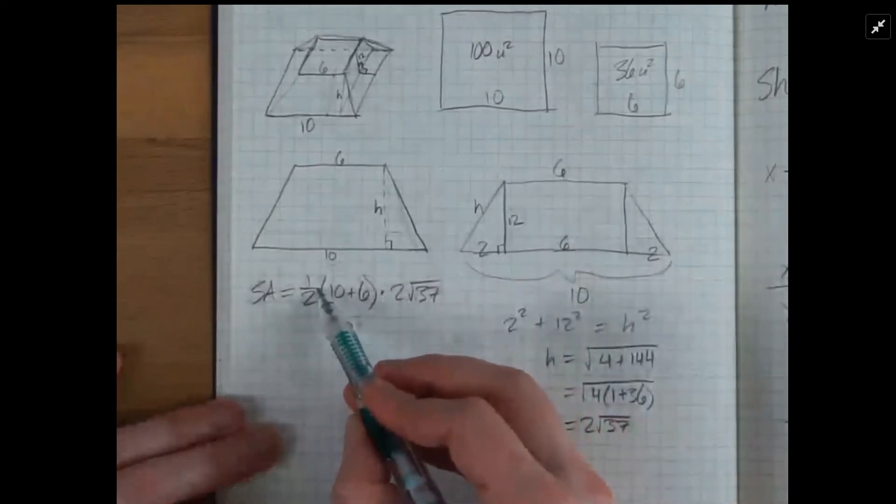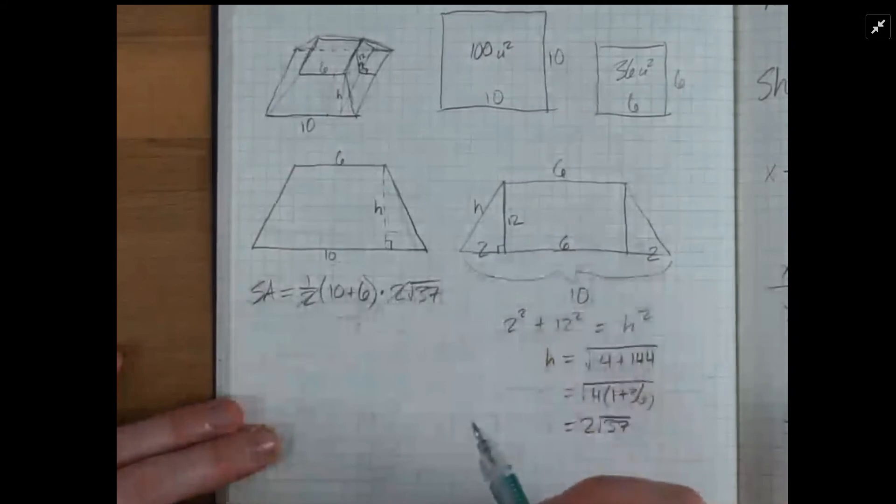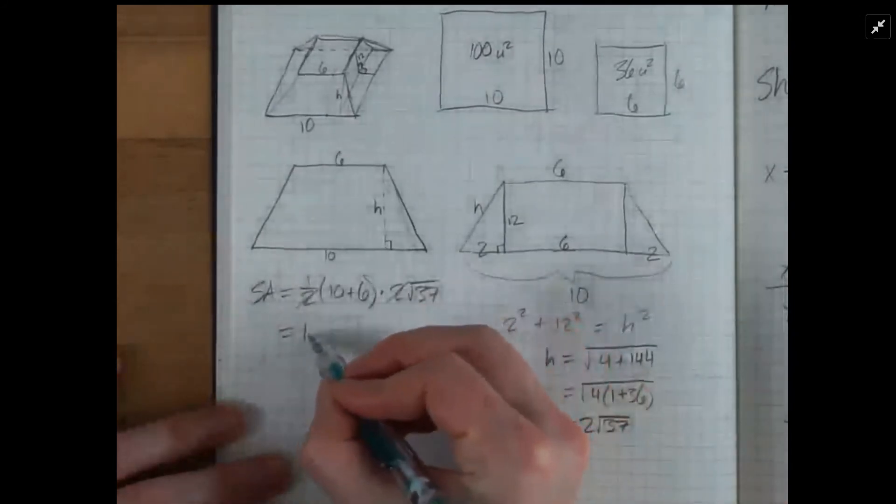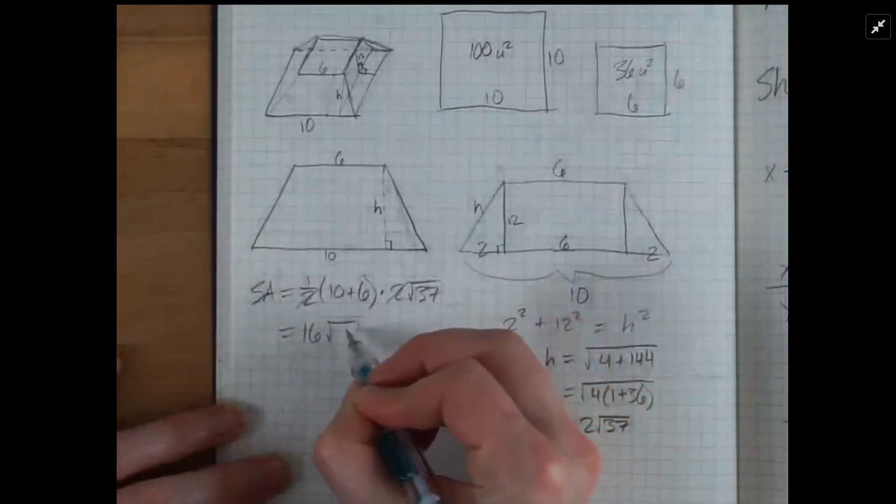And to simplify this, I'm going to eliminate those 2s that cancel each other out, which equals 16 square root 37.